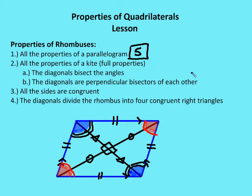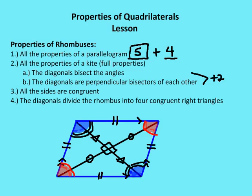So you can think of this as a plus two: the diagonals bisect both pairs of angles, and both diagonals are perpendicular bisectors of each other. Additionally, all sides are congruent, and the diagonals divide the rhombus into four congruent right triangles — each triangle has a side, right angle, side pattern. So overall, I've got five properties of the parallelogram plus four independent to the rhombus.